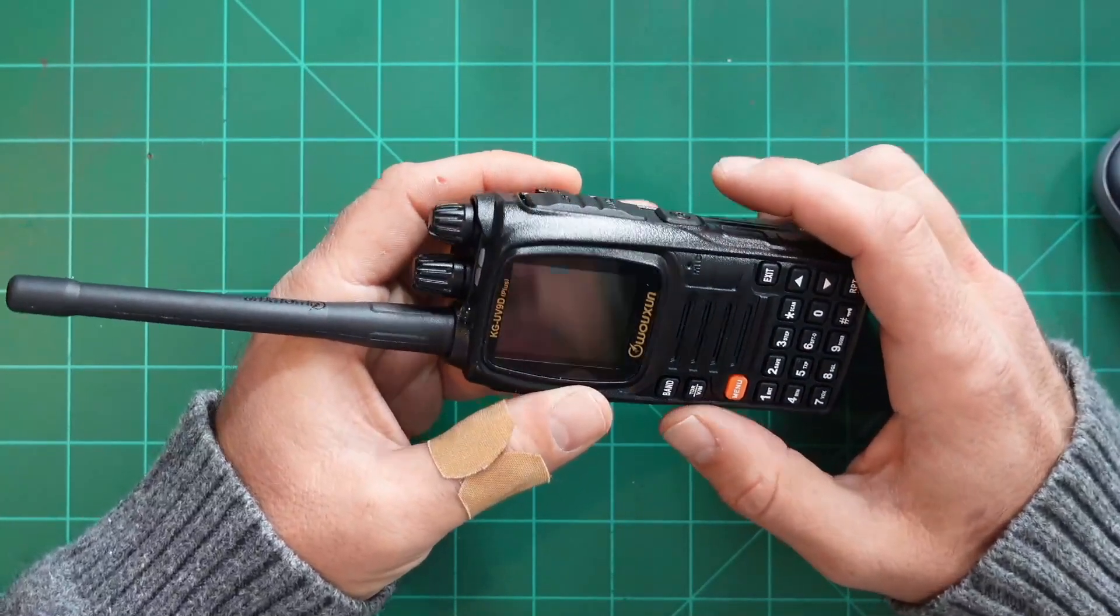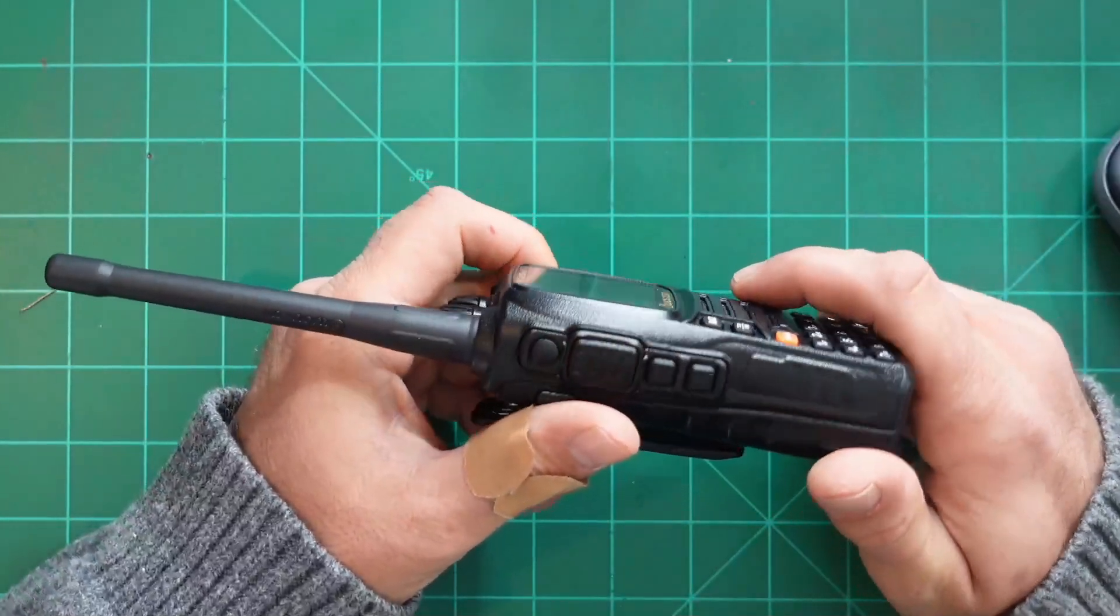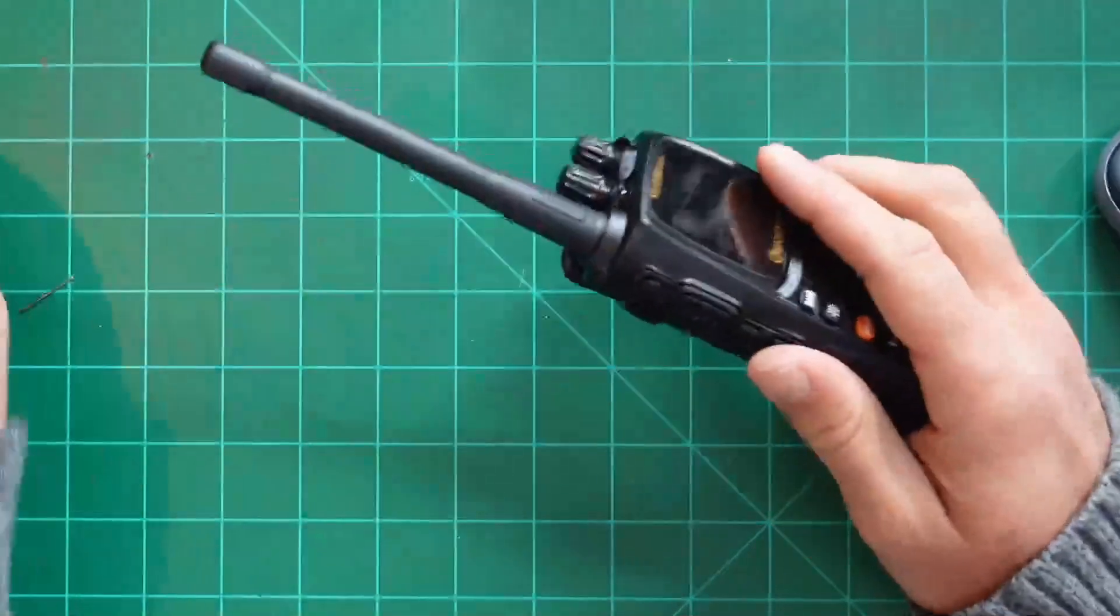The KG-UV90+, this radio right here, was $169 at HamRadio Outlet. When I purchased it, it came with two antennas.